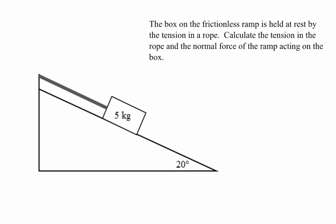Instead of using the terms x and y axis, I'm going to use different names. Our axes just need to be perpendicular to each other. If the box is sliding along the ramp, we want parallel to the ramp as one axis — that way motion is one-dimensional. The other axis must be perpendicular to that one, so perpendicular to the ramp. I'll refer to these as the parallel axis and the perpendicular axis.